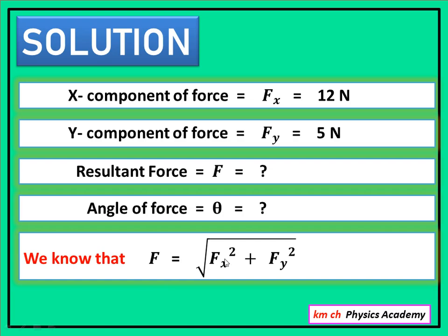F is equal to square root of FX square plus FY square. X component کا square لینا ہے plus Y component کا square لینا ہے اور پھر ان کا square root لینا ہے۔ تو values put کرتے ہیں F نکالنے کے لیے۔